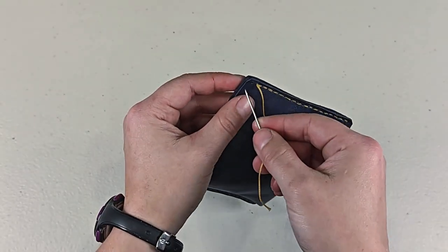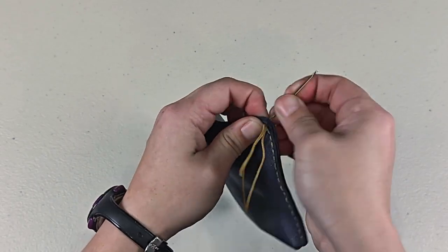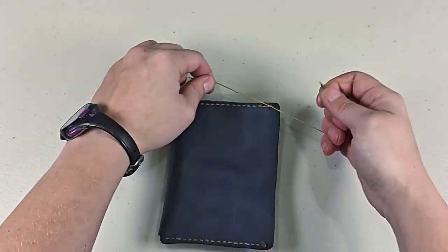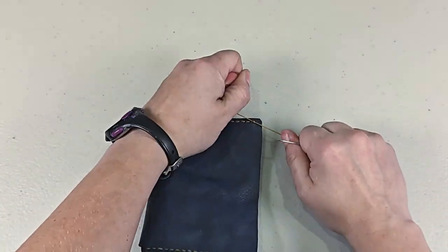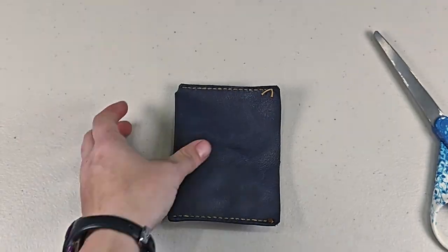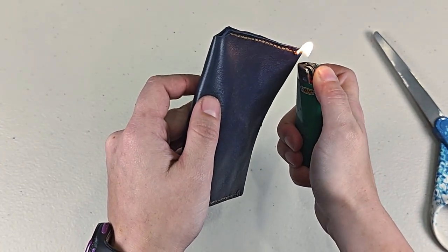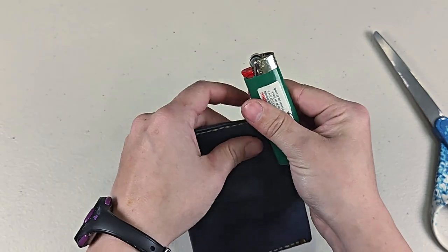For the last stitch, I'm only going to go through the hole with one thread so both threads end up on the same side. From there, we'll tie a traditional double knot. Snip the ends, leaving about a third of an inch of thread left. And then using our lighter, we'll melt the ends, and then I use the side of my lighter to flatten down the melted wax thread.